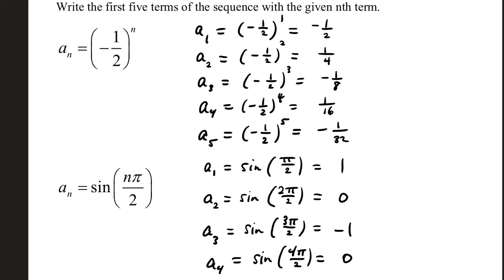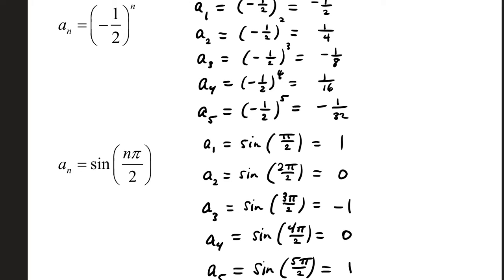In the next example, we have a sub n. Our nth term is sine of n times pi over 2. a sub 1 is when you replace n with 1. So that's sine of 1 times pi over 2, or pi over 2. Sine of pi over 2 is 1. a sub 2, replace n with 2. 2 pi over 2, that's the same as just pi. If 2's cancel, sine of pi is 0.